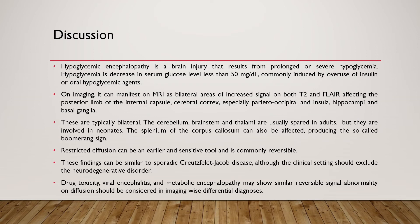Hypoglycemic encephalopathy is a brain injury that results from prolonged or severe hypoglycemia. Hypoglycemia is considered when the blood glucose level goes below 50 mg per 100 ml, and it is commonly induced by overuse of insulin or oral hypoglycemic agents. On MRI it can manifest as bilateral areas of increased signal on T2 and FLAIR images affecting the posterior limb of internal capsule, cerebral cortex especially parietooccipital and insula, hippocampi, and basal ganglia. The cerebellum, brainstem, and thalami are usually spared in adults but involved in neonates. The splenium of corpus callosum can be affected, producing the so-called boomerang sign.